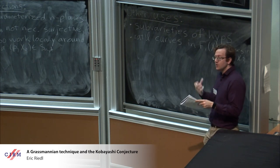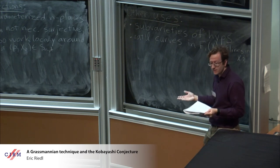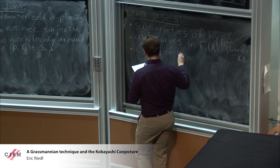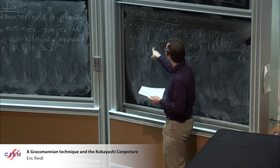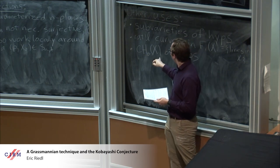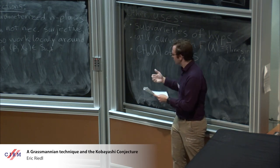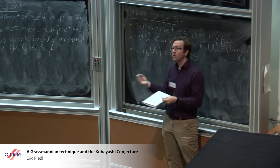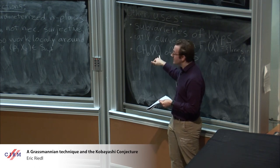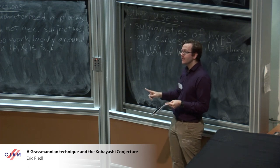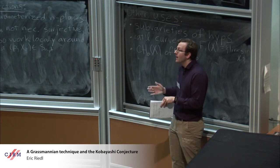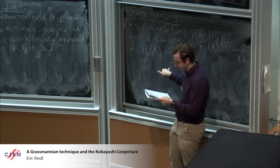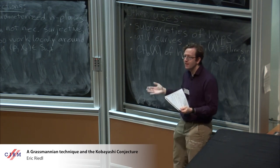Another application: Chow zero of hypersurfaces — the group of zero cycles up to rational equivalence. There's a conjecture of Voisin (or Chen-Lewis-Cheng, depending on which paper) saying precisely how many points on your hypersurface can be equivalent to each other. This technique almost immediately gives all but one case of that conjecture. The large degree cases had been done by Voisin; the smaller degree cases were open. We completely finished off that conjecture — that was actually our original motivation for looking at this technique, and the Kobayashi stuff was almost a bonus.